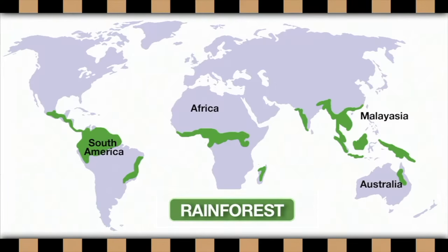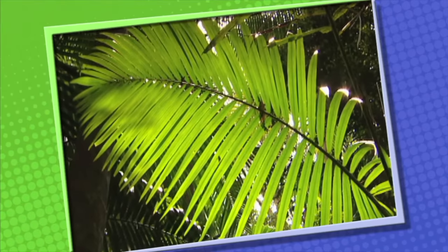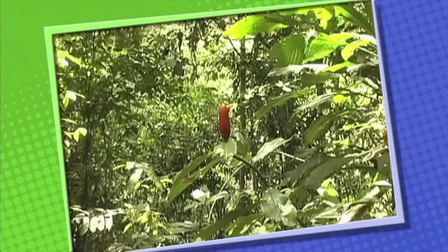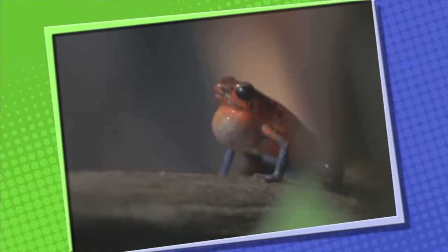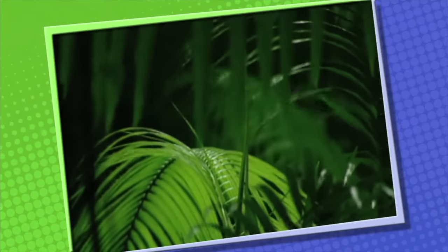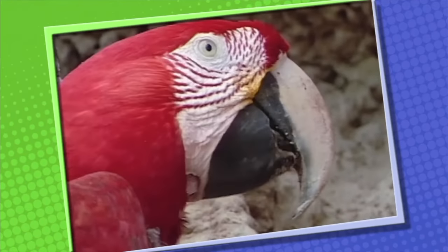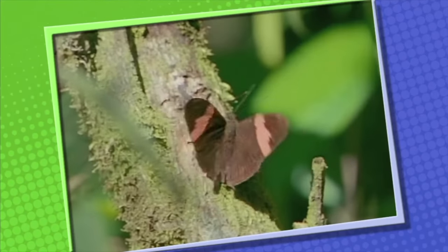Rainforests are found in South America, Africa, Malaysia, and Australia. The plants in rainforests grow very quickly, and they're adapted to the large amounts of rainfall and the excessive heat that are characteristic of rainforests. In a rainforest, you'll find plants with very broad leaves and trees that grow tall above the shrubs and vines. Animals living in a rainforest have adapted to life among tall plants. There are small animals like tree frogs, large predators with body colors that help them hide in the dense foliage, and the bright and colorful macaws blend in with the flowers of the rainforest. The rainforests also have the largest insect population in the world, including one of the largest populations of butterflies.